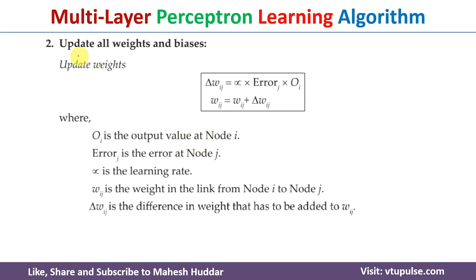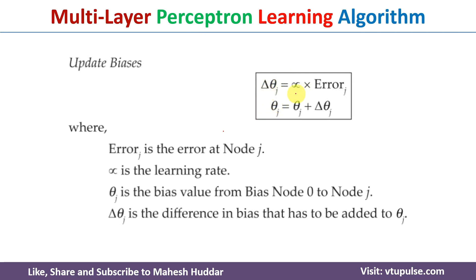Once we calculate the errors at both output and hidden layer neurons, the next step is to update all weights and biases. To update weights, we use: delta_w_ij equals alpha (learning rate) multiplied by error_j multiplied by the input. We add this change to the previous weight to get the new weight. To update biases, since the input is always equal to 1, the formula is: delta_theta_j equals alpha multiplied by error_j. Then theta_j equals theta_j plus delta_theta_j, giving us the updated bias.